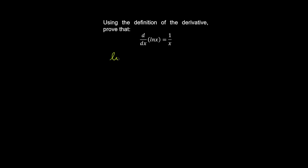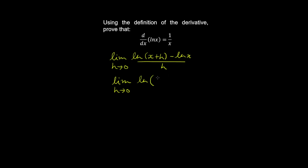Let's prove the derivative of the natural log of x using the definition. We take the limit as h goes to zero of the natural log of x plus h minus the natural log of x, all over h. Using the rules for logarithms, this becomes the limit of the natural log of x plus h over x, which is one plus h over x, all over h. Now we can use a change of variables: let u equal h over x, which implies that one over h equals one over x times u.